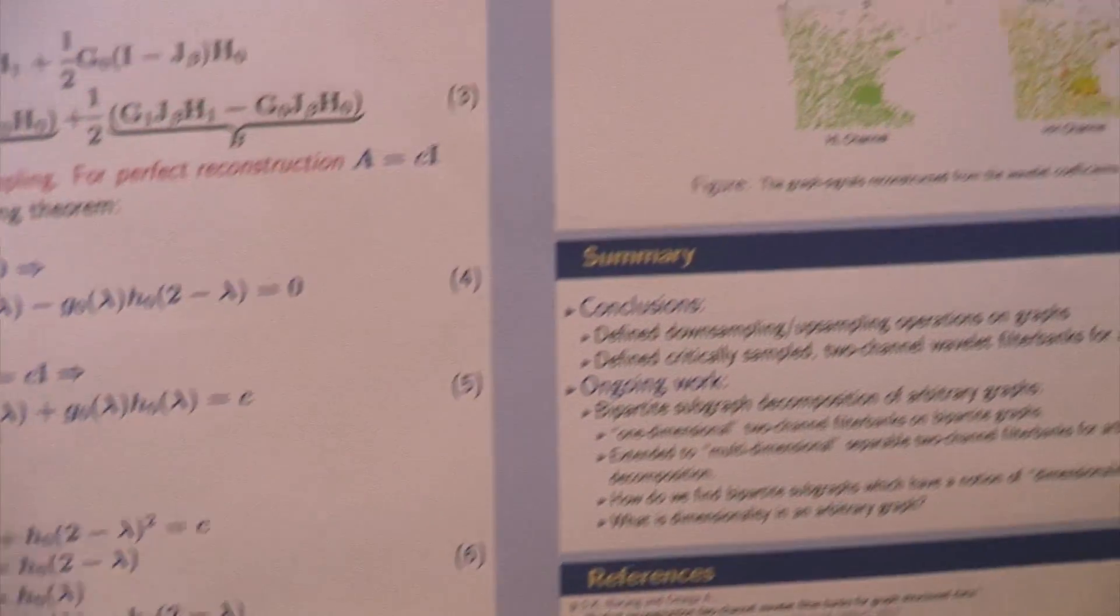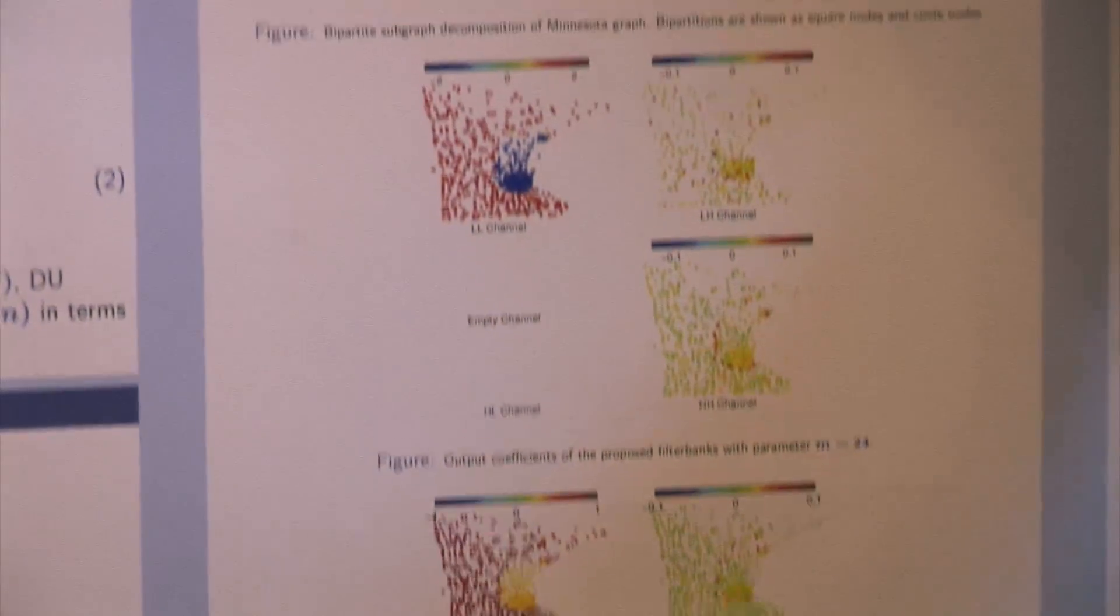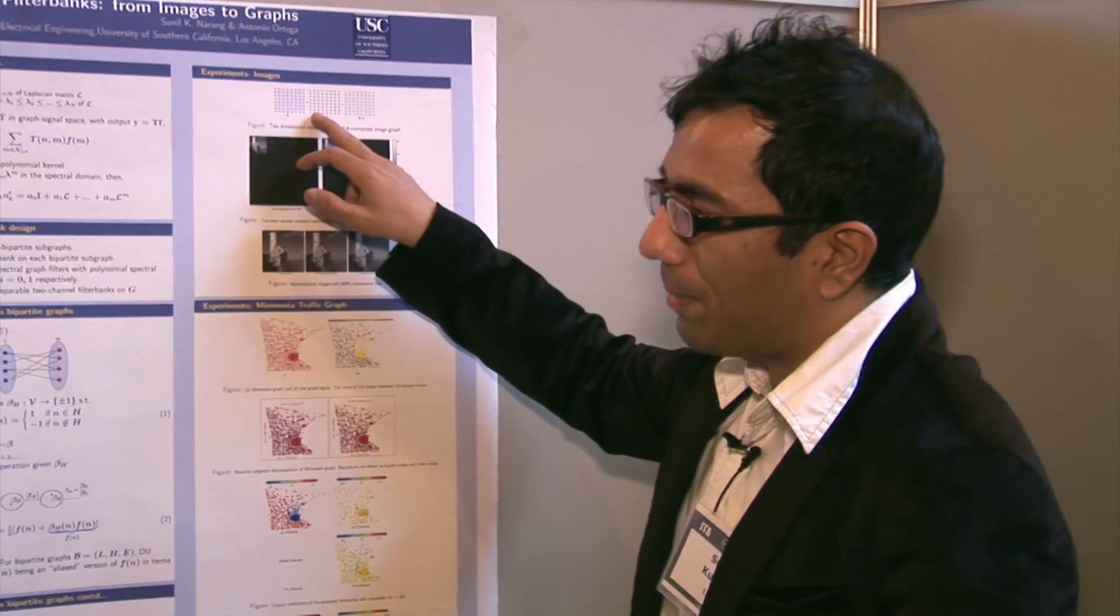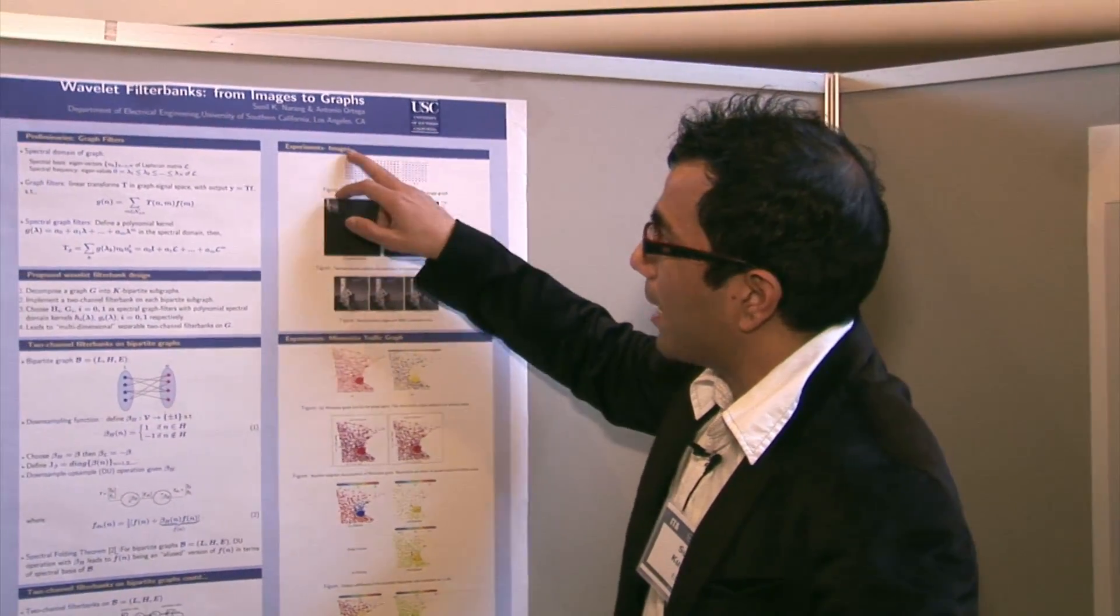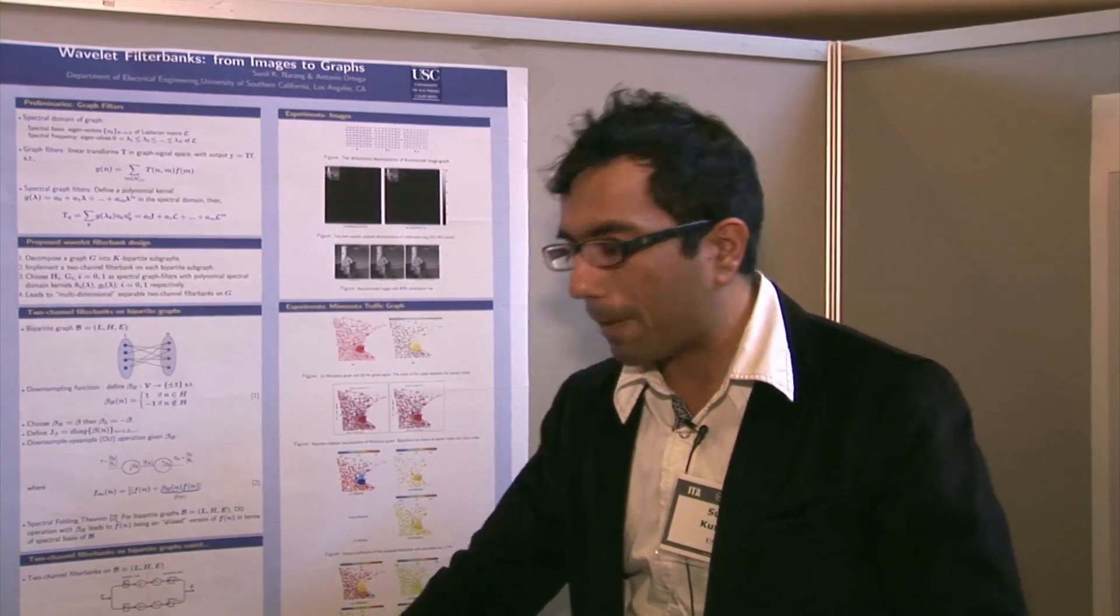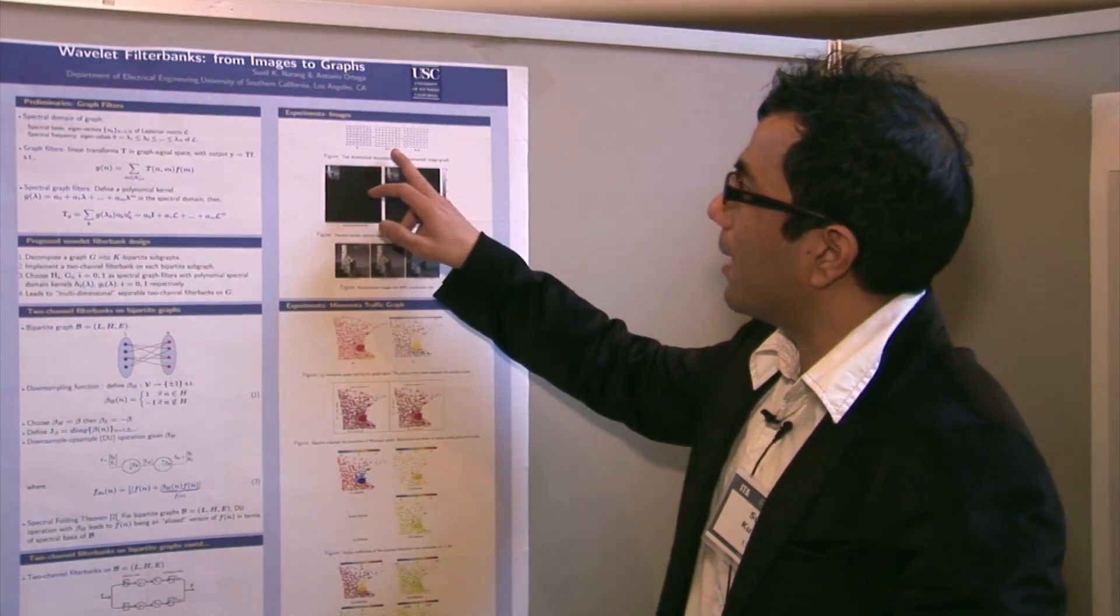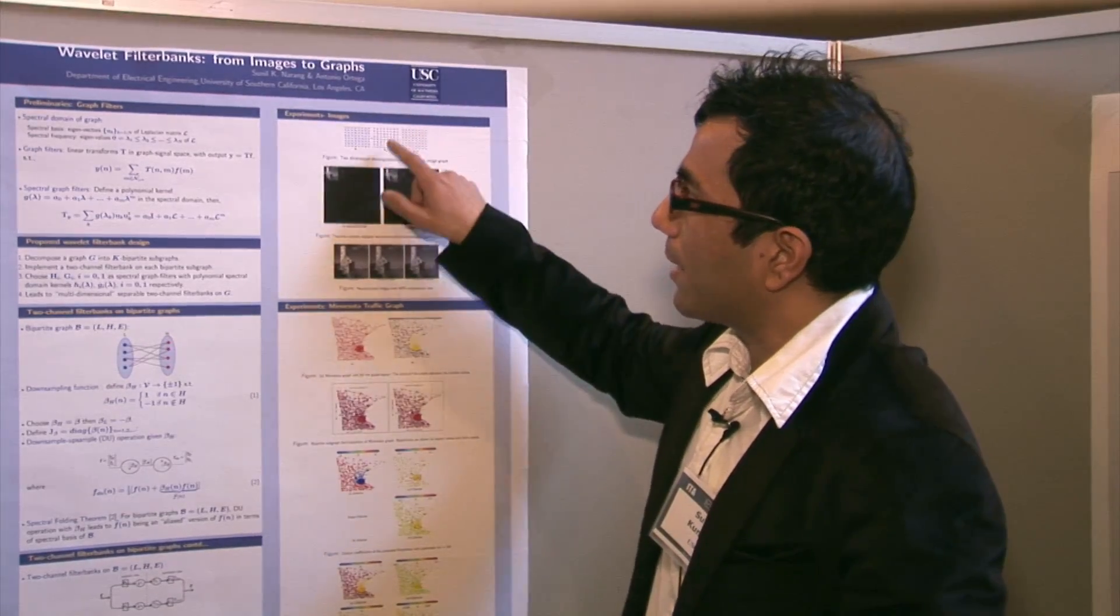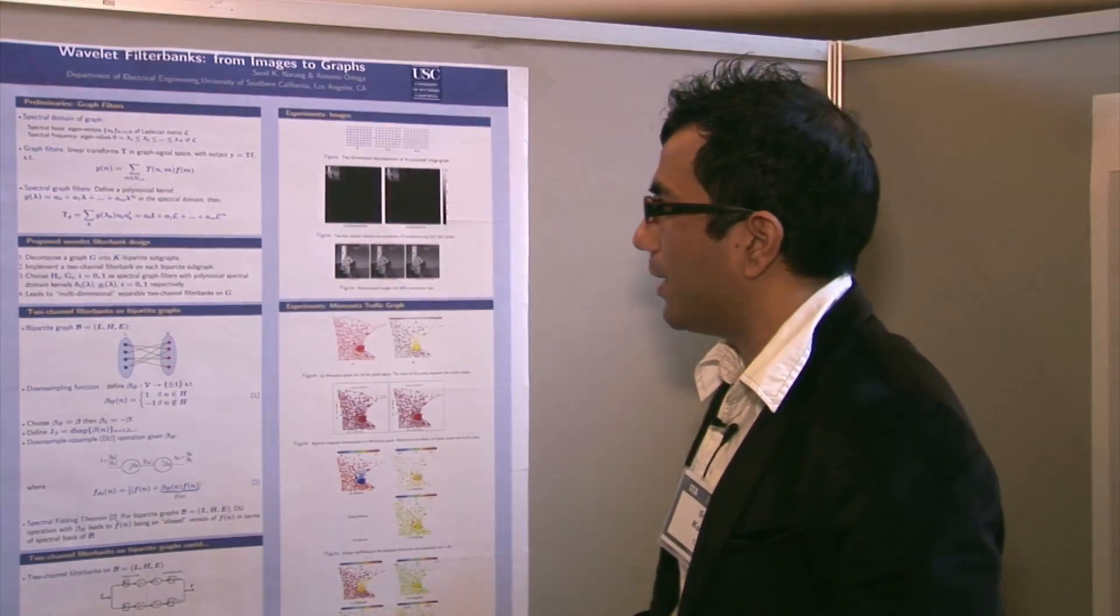Some of the experiments that demonstrate the application of our work is that we can add extra orientation in an image. For example, instead of considering them as just four connected pixels, we can connect them as eight connected pixels. It turns out that this graph can be decomposed using our proposed decomposition as a rectangular graph and a diamond graph, both of which are bipartite.